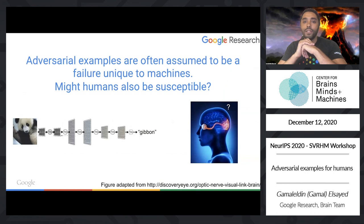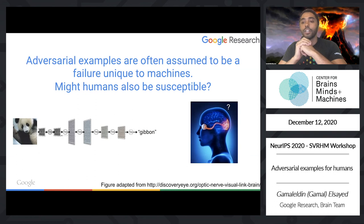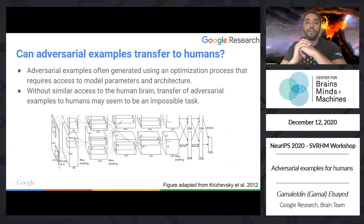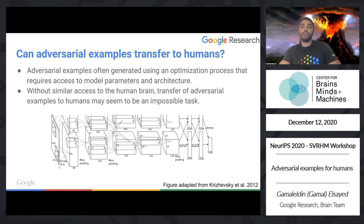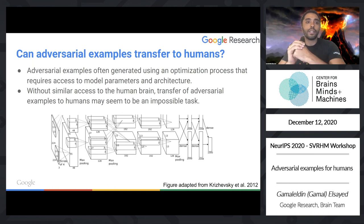When adversarial examples were first brought up, it was assumed these are unique failure modes to computer vision models. One of the things I've been interested in is studying whether humans can be susceptible to the same mistakes that these models are making. Generally, adversarial examples are generated by an optimization process that requires access to model parameters and architecture, and it may seem initially not possible to transfer these to humans as we don't have access to the human brain. However, there have been some clues that this transfer is actually possible.